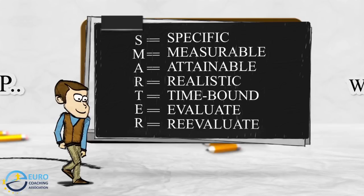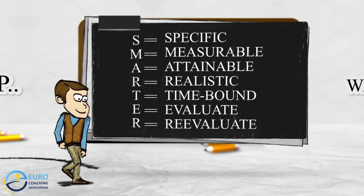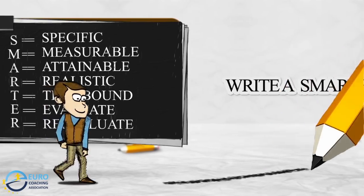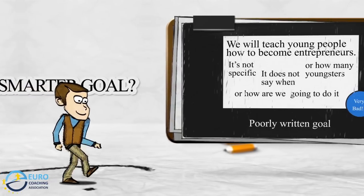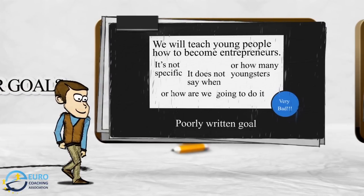Well-written goals can be easily managed and provide a clear route to success. But how do you write a SMARTER goal? Let's look at a poorly written goal: 'We will teach young people how to become entrepreneurs.' There are several problems with this goal — it is not specific enough. It does not say when it will happen, how many youngsters are involved, or how we are going to do it. With this goal, I don't know what to measure or when I can expect my results.